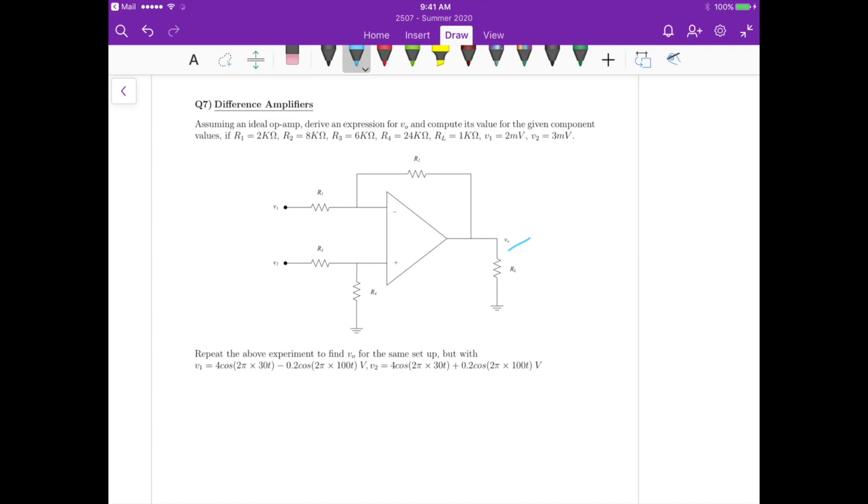R1, R2, R3, R4, and to calculate the output voltage. And we have to repeat that experiment to find Vout for the same setup but with voltage sources that are cosine with different frequencies. Okay, so let's start with part 1.